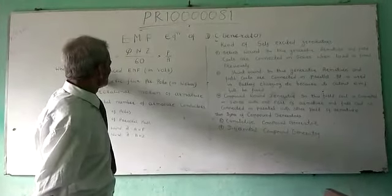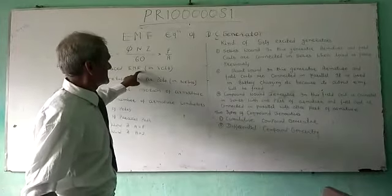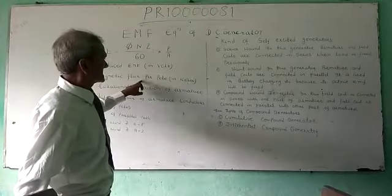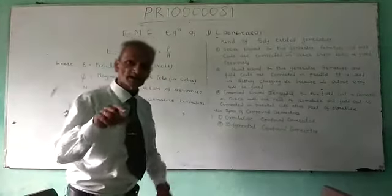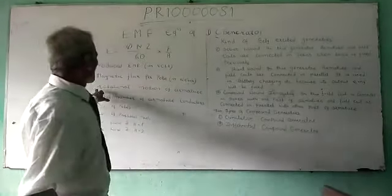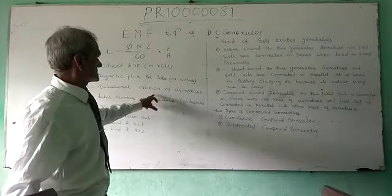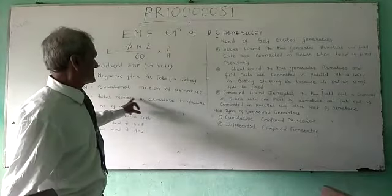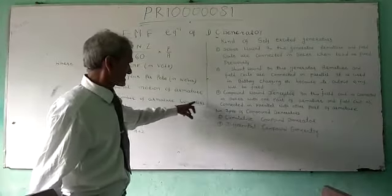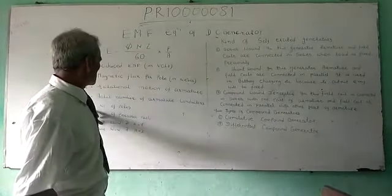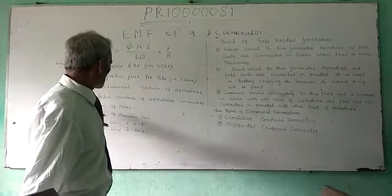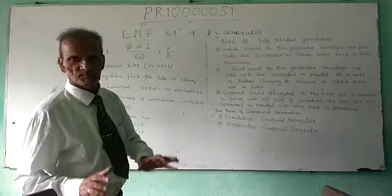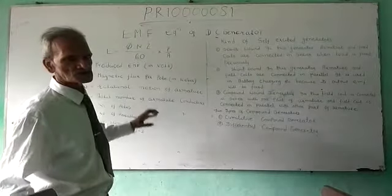E is the produced EMF in volts, phi is the magnetic flux per pole in webers, N is the rotational motion of the armature in RPM, Z is the total number of armature conductors, P equals the number of poles, and A equals the number of parallel paths.